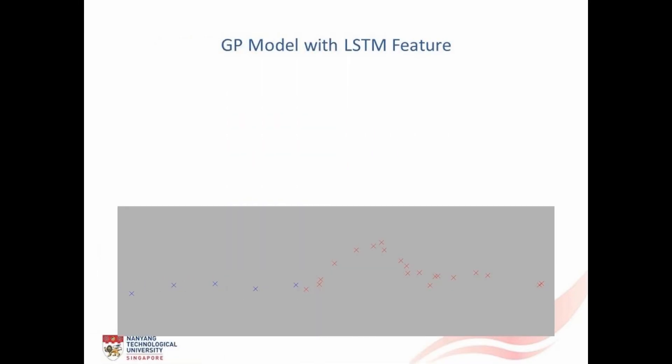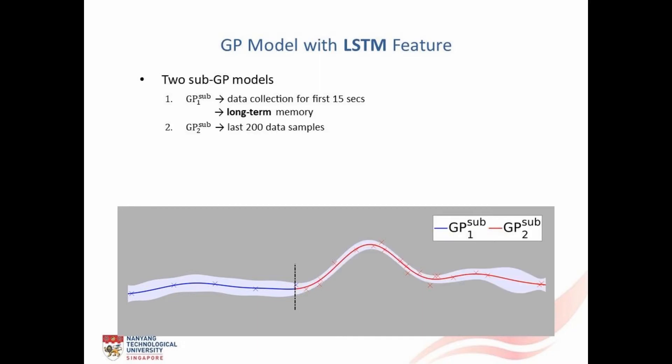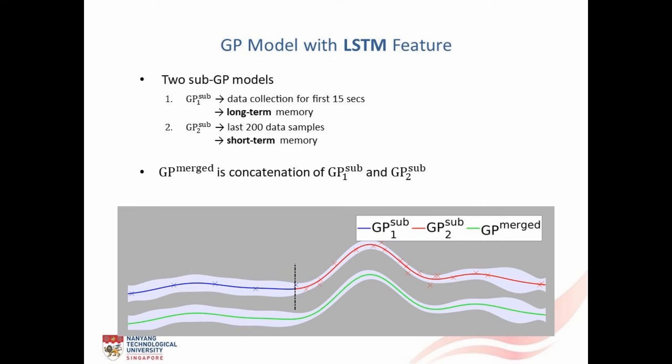Furthermore, the accurate learning ability of the designed GP model is mainly credited to the long short term memory feature. In essence, each GP model consists of two sub GP models. The first sub GP model is designed with the data collected for the first 15 seconds and thus represents the long term memory. The second sub GP model, on the other hand, is designed based on the data collected over a past window with 200 samples. Additionally, this window moves forward in time, thus granting it the short term memory feature. Finally, the overall GP model is constructed by concatenating the two sub GP models.